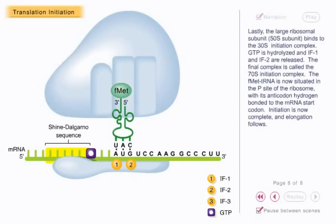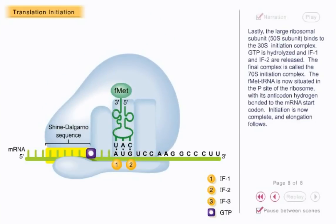Lastly, the large ribosomal subunit, 50S subunit, binds to the 30S initiation complex. GTP is hydrolyzed and IF1 and IF2 are released. The final complex is called the 70S initiation complex.